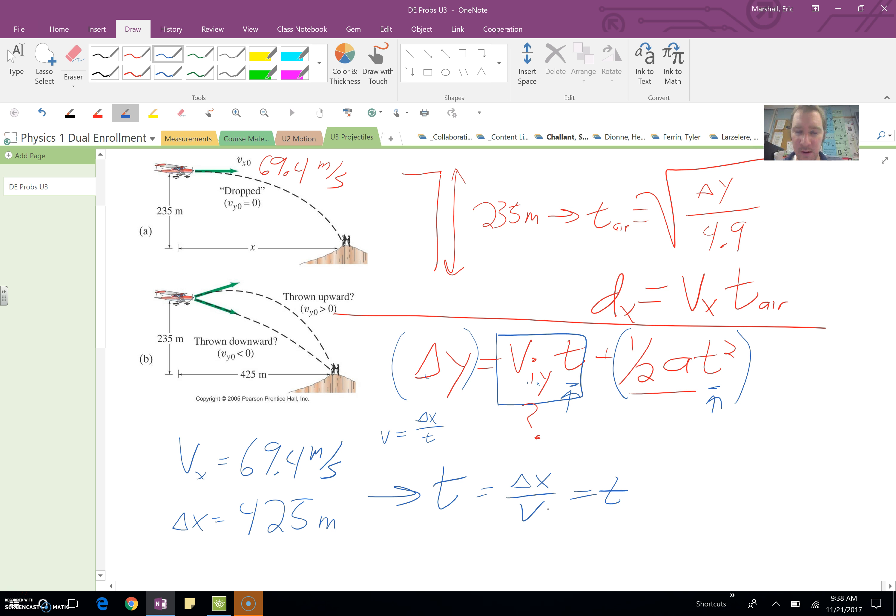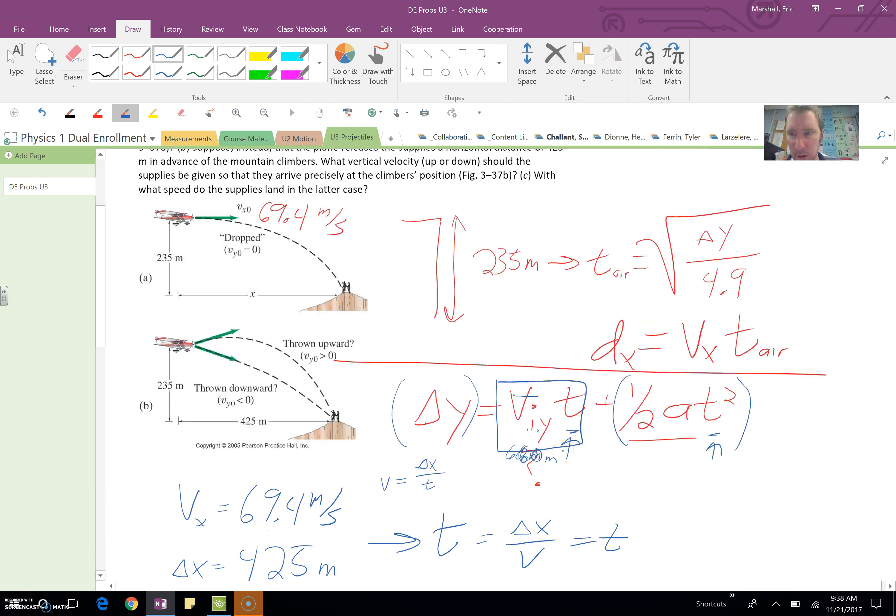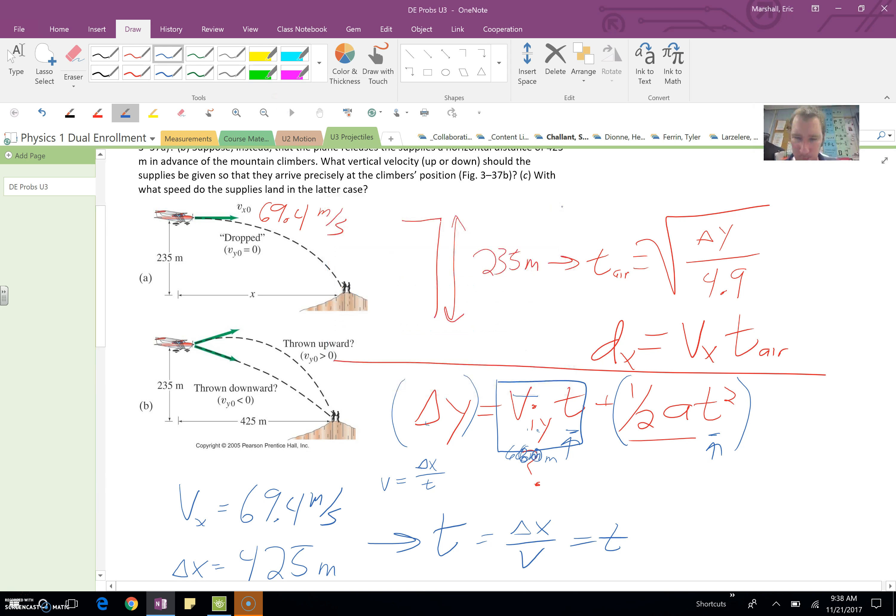So if you need to fall an additional 60 meters, then how fast do you have to be going to cover that 60 meters? I hope that gives you enough of what you need.